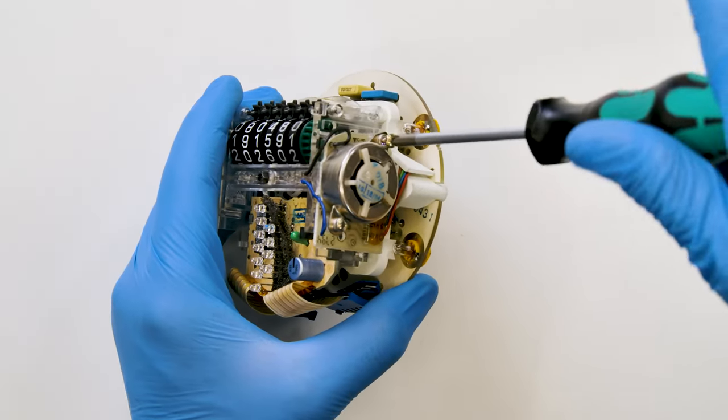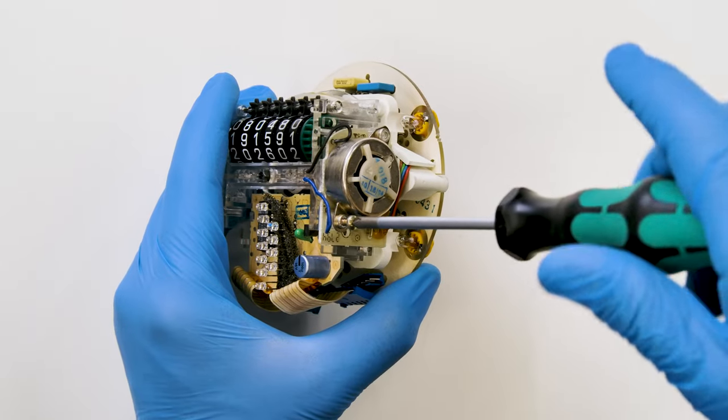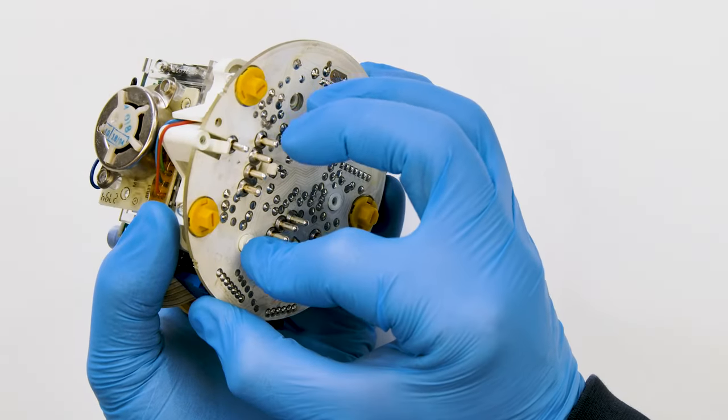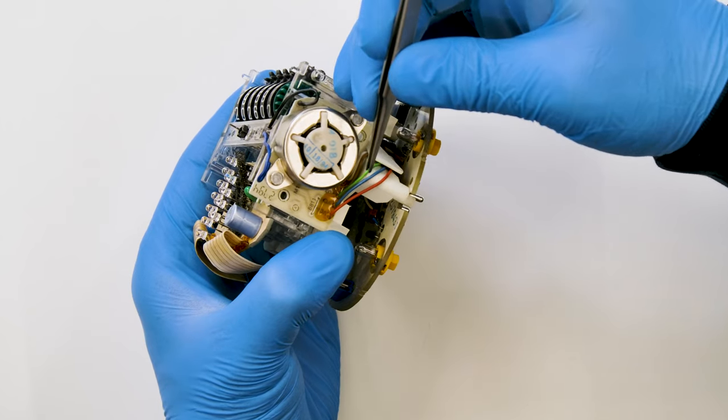Undo the two screws securing the motor of the odometer. Detach the circuit and with the head of the tweezers, remove the motor as well.